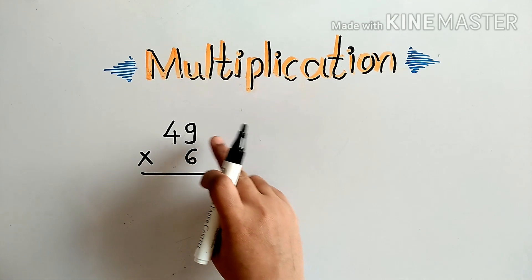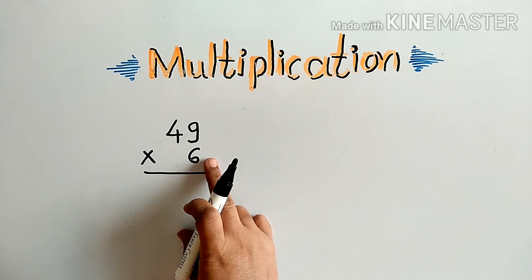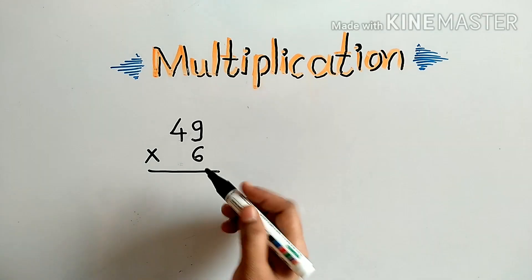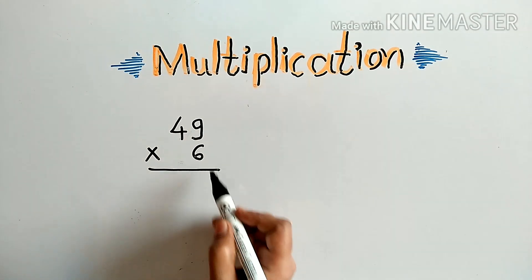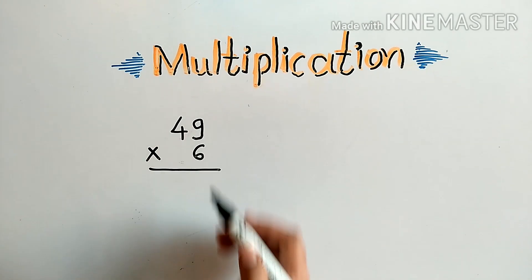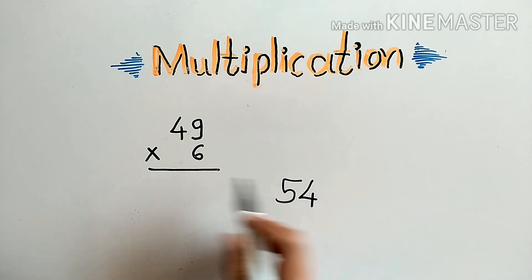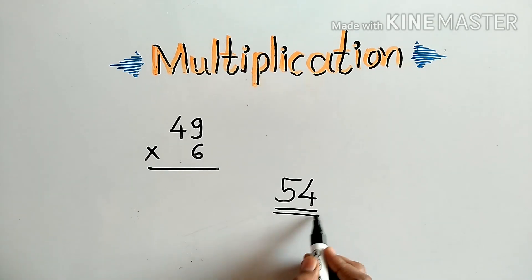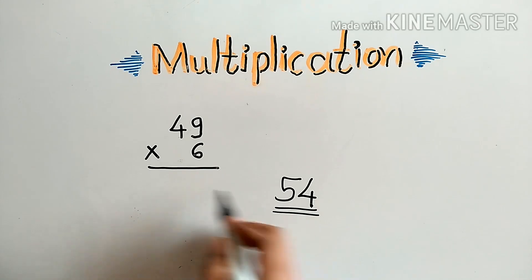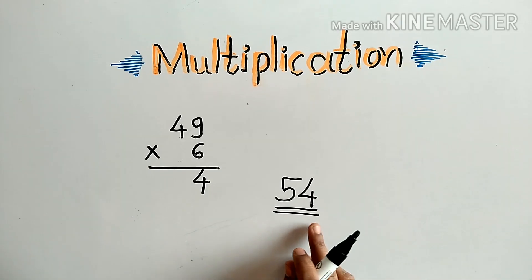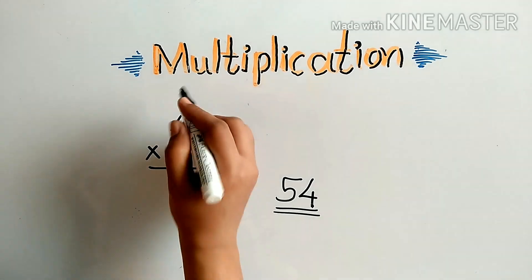49 is the multiplicand and 6 is the multiplier. First we will multiply 6 by 9. 6 nines are 54. Here we take only 4 at the bottom, which is the units digit, and the tens digit 5 will go as carry over.